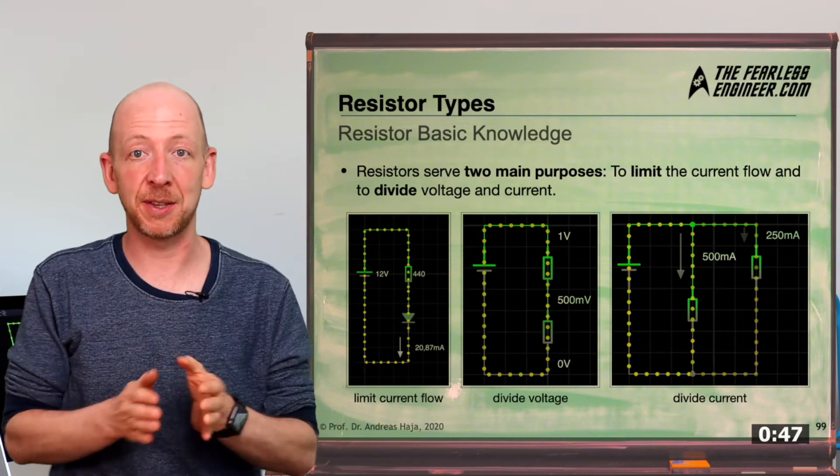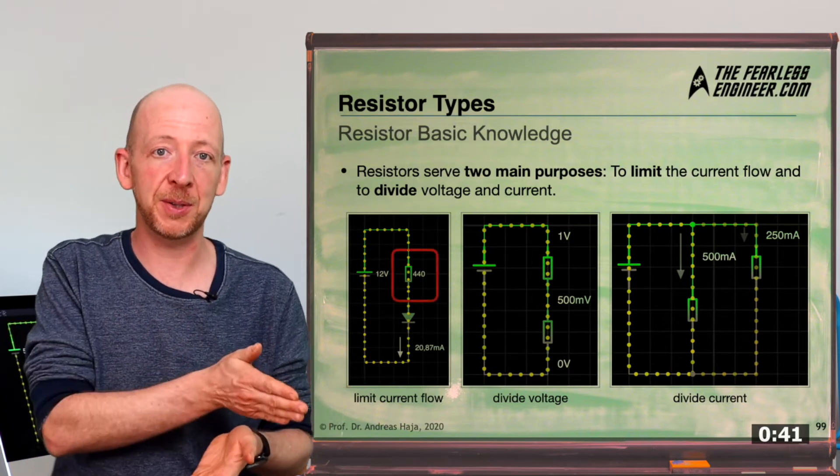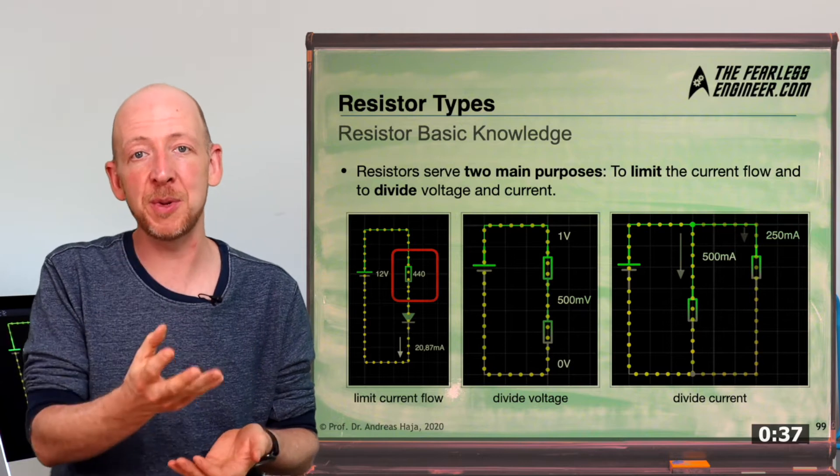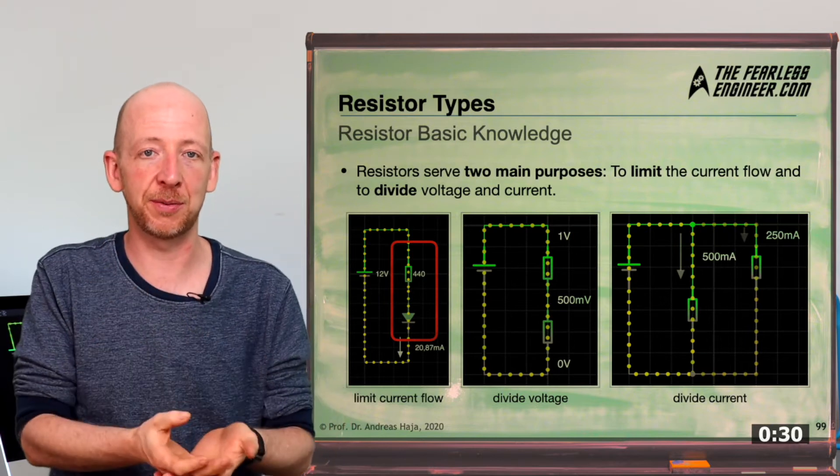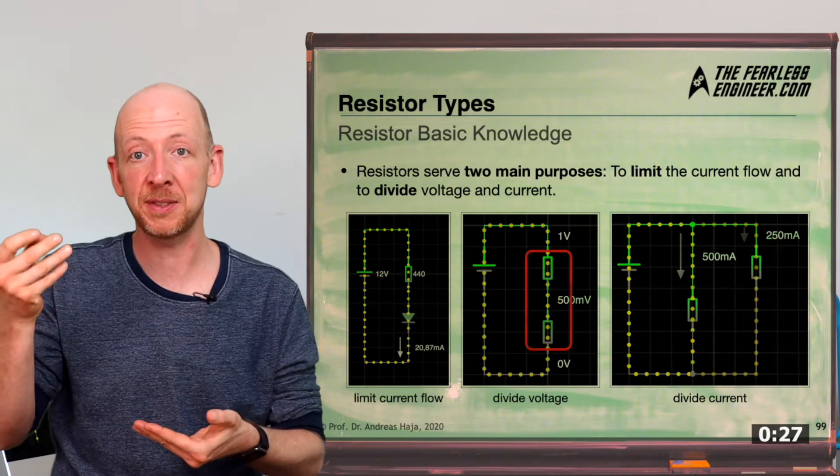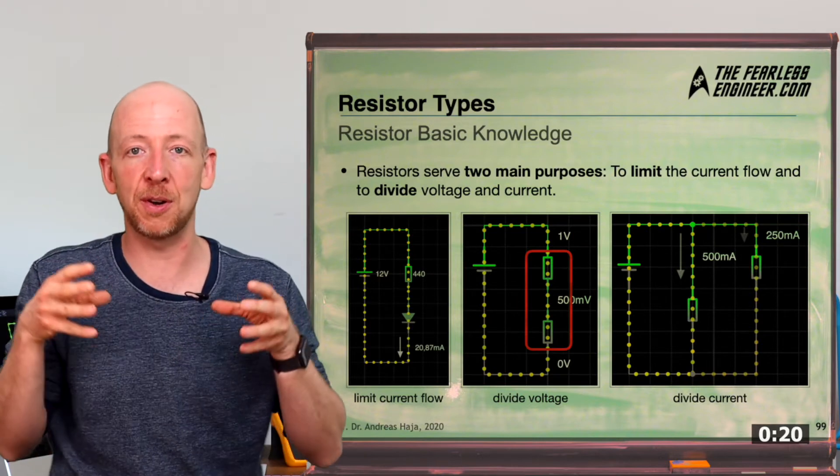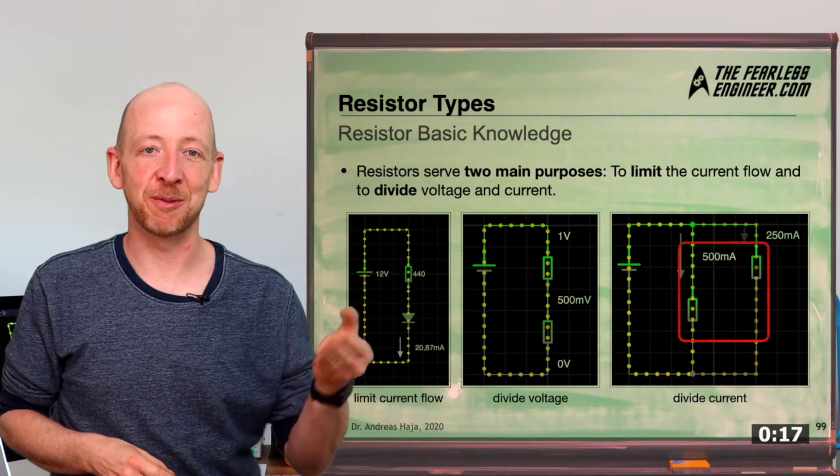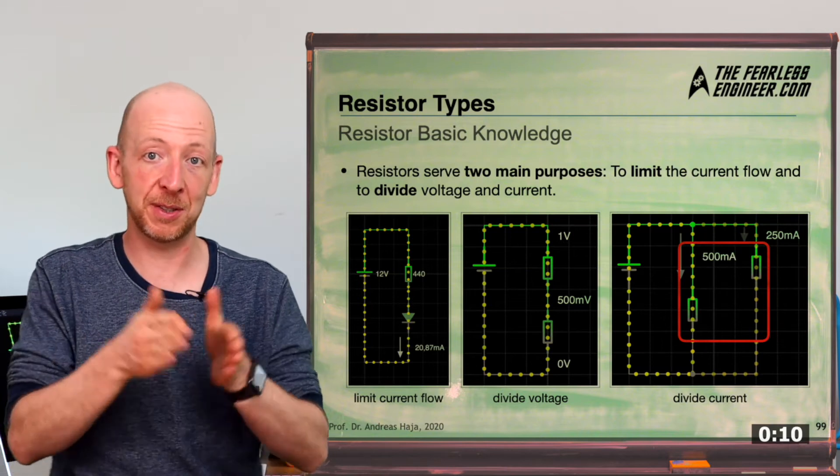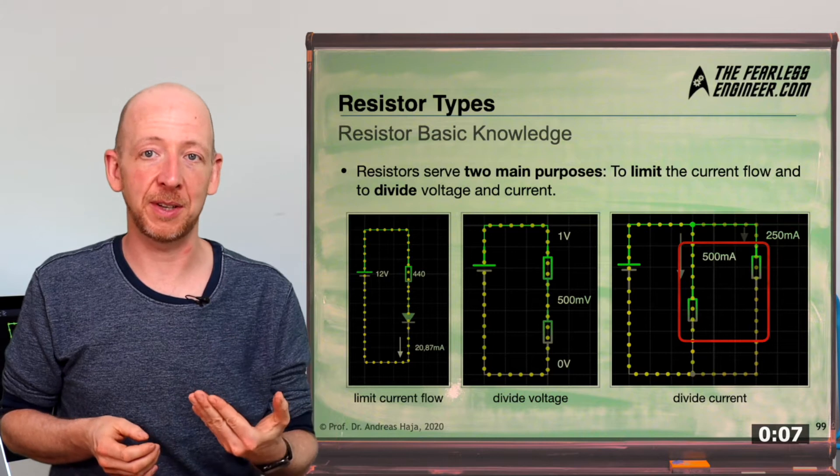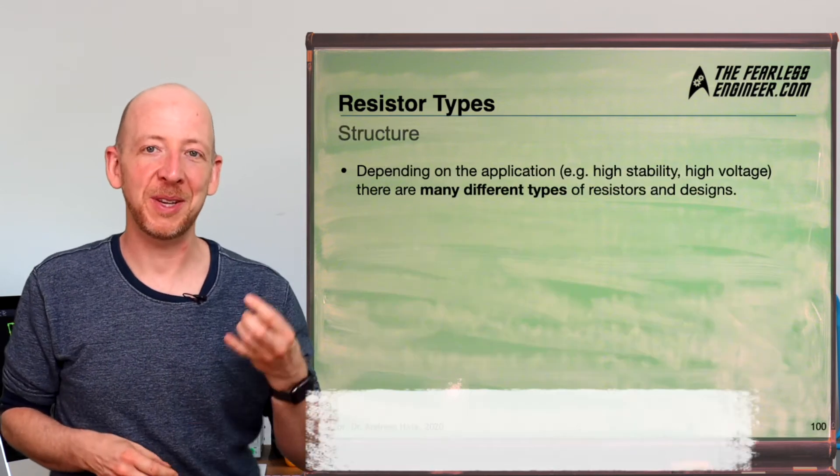Now, resistors are used in all areas of electronics, and they serve a whole range of different functions. On the left side, you can see a resistor of 440 Ohms, which has the job to limit the current through a light-emitting diode or short LED. In the circuit diagram in the middle, you can see two resistors, and their task is to divide the source voltage across themselves, which is why this setup here is called a voltage divider. In the circuit diagram on the right, the resistors are connected in parallel. The main purpose of this circuit is to divide the current across the two branches in proportion to the resistor values.